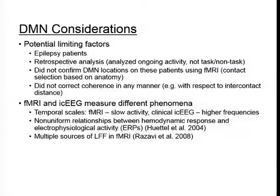Going back to the default mode network analysis, there are several considerations for why our intracranial EEG results are discordant with fMRI studies. First, these are epilepsy patients, so there is a risk that the default mode network may have changed due to epilepsy. Also, this was a retrospective analysis and patients weren't necessarily directed to be in a non-task state.